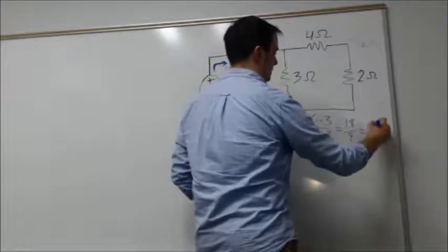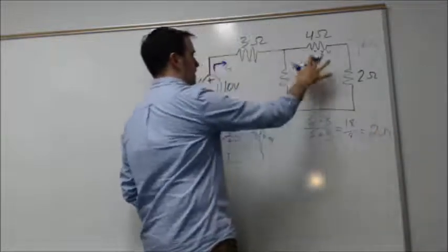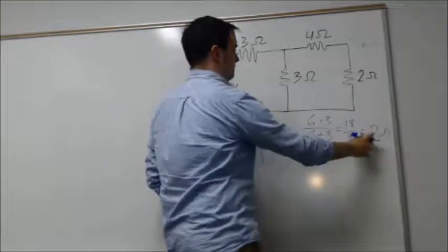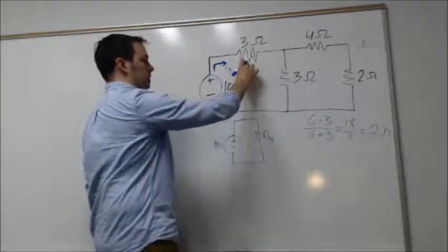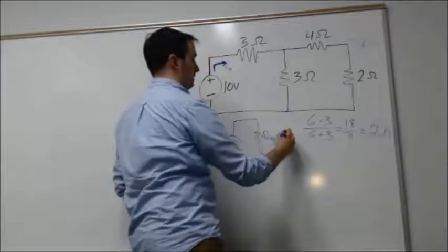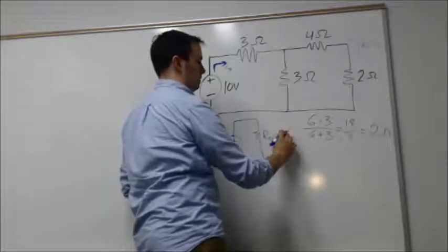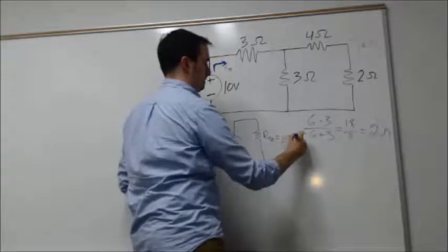Then we have this 2 ohms in series with a 3 ohm resistance, which means our equivalent resistance for the whole thing is going to be 5 ohms.